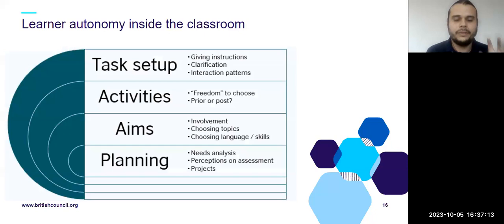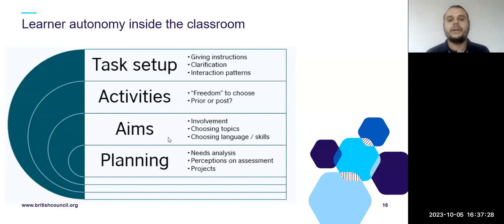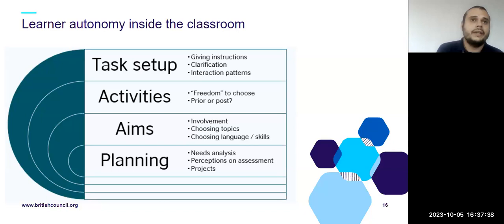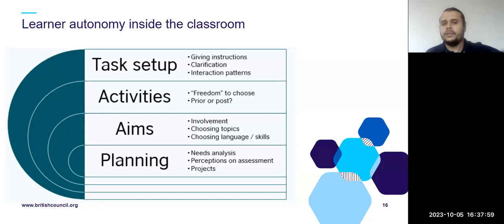So looking at what learners can take ownership of inside the classroom — using Holec's aspects — I worked through them gradually: from setting up tasks, to choosing activities, choosing the learning aims, and up to planning. I did it in that specific order because as you progress, the degree of autonomy required increases. In setting up tasks, as a teacher I don't have to give instructions all the time. I can let one student do it: 'Can you tell us what we have to do?' Or elicit instructions: 'What is this? What do you have to do here?' Same with clarification and interaction patterns.